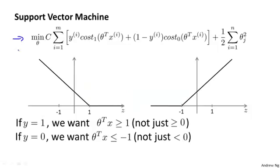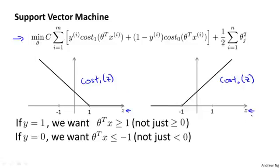Here's my cost function for the support vector machine. On the left, I plotted my cost one of z function that I used for positive examples, and on the right, I plotted my cost zero of z function, where I have z on the horizontal axis. Now let's think about what it takes to make these cost functions small.